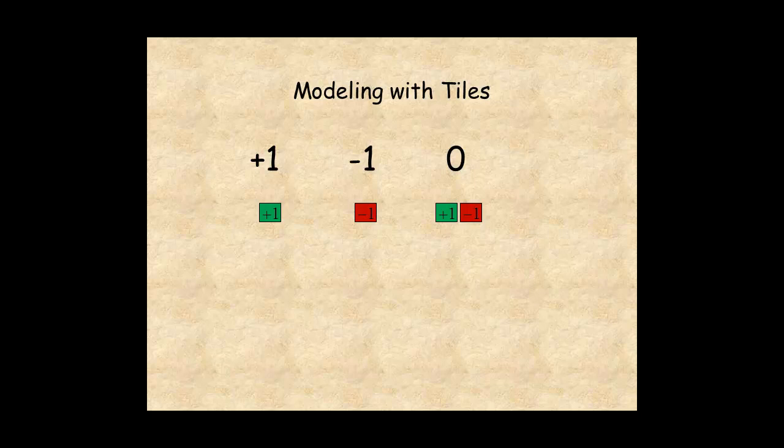Because the pair of green and red tiles represent zero, you can take them away or add them without changing the value of the expression.